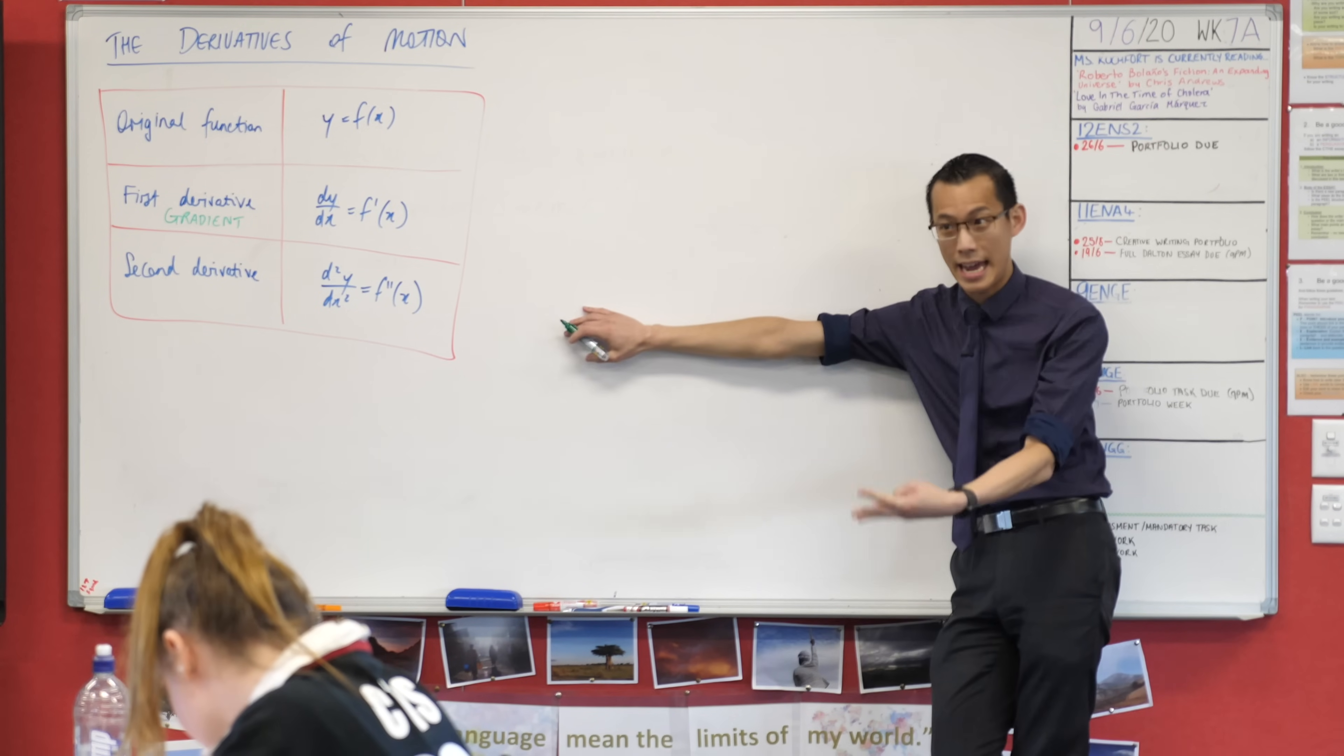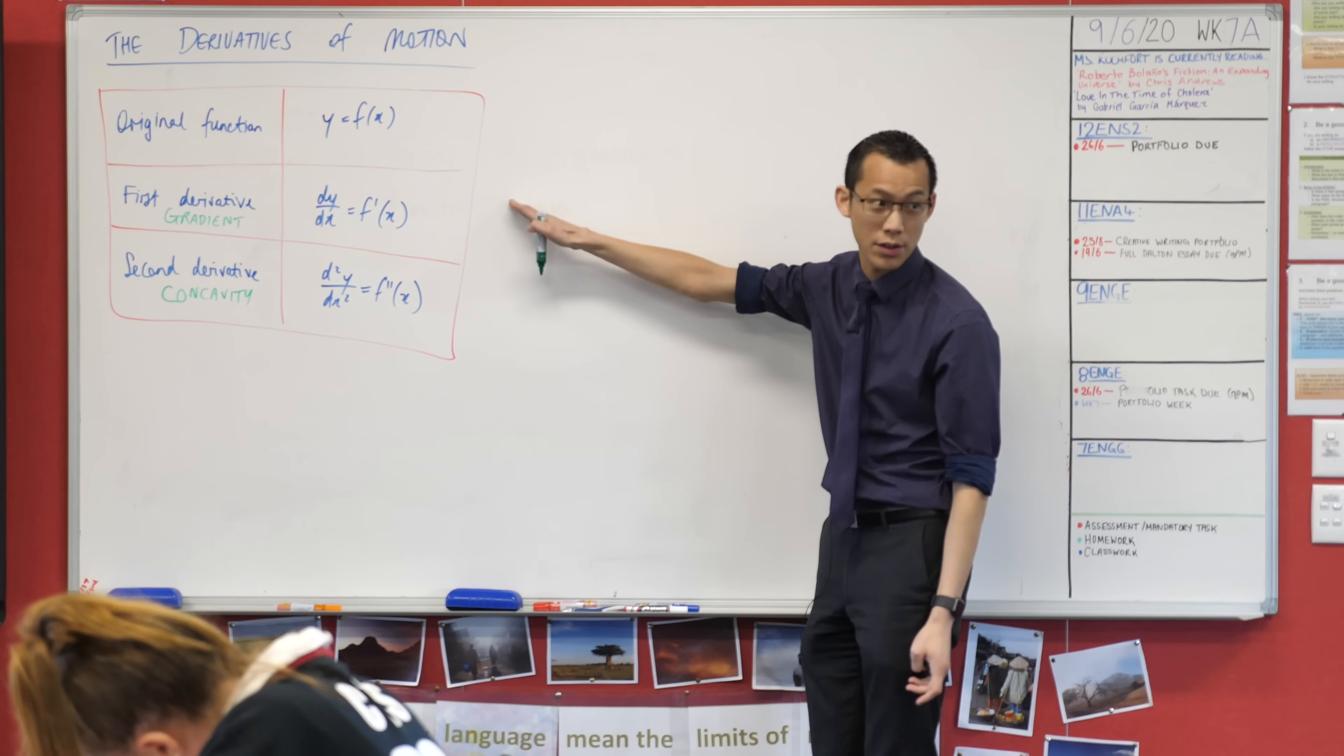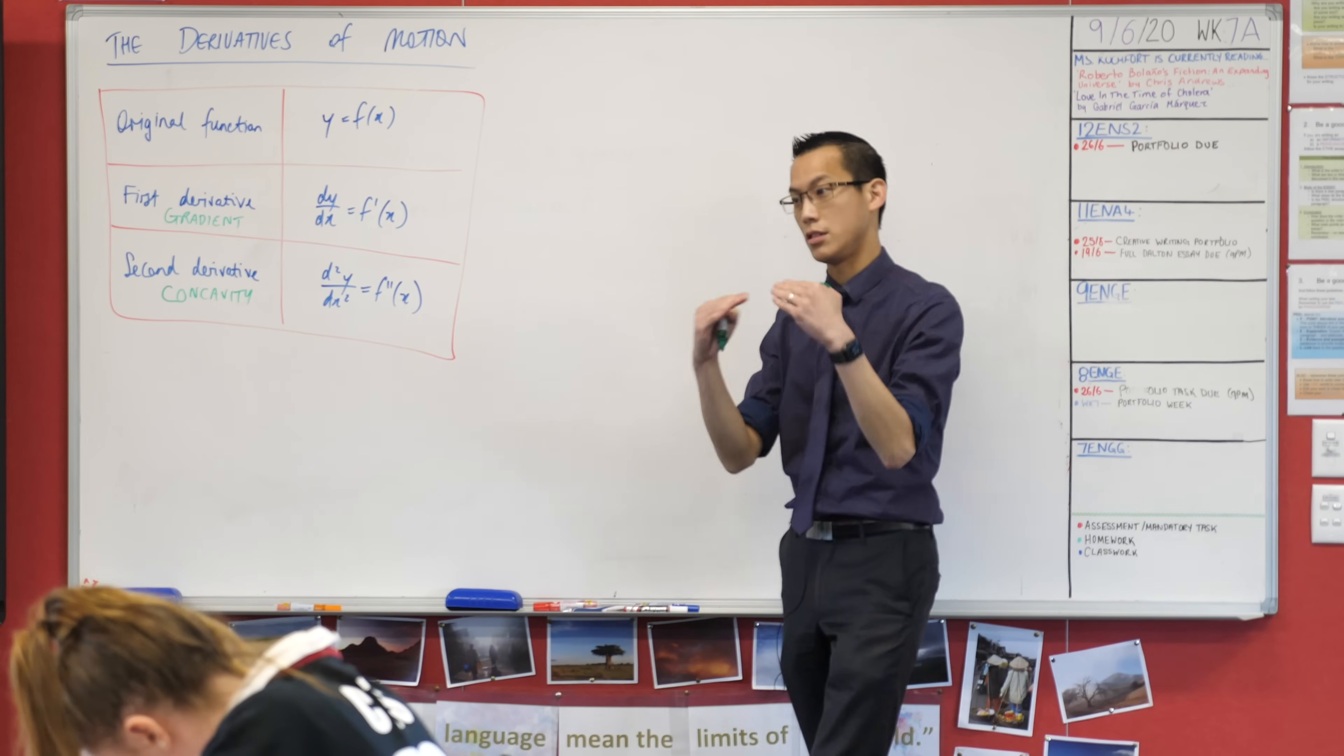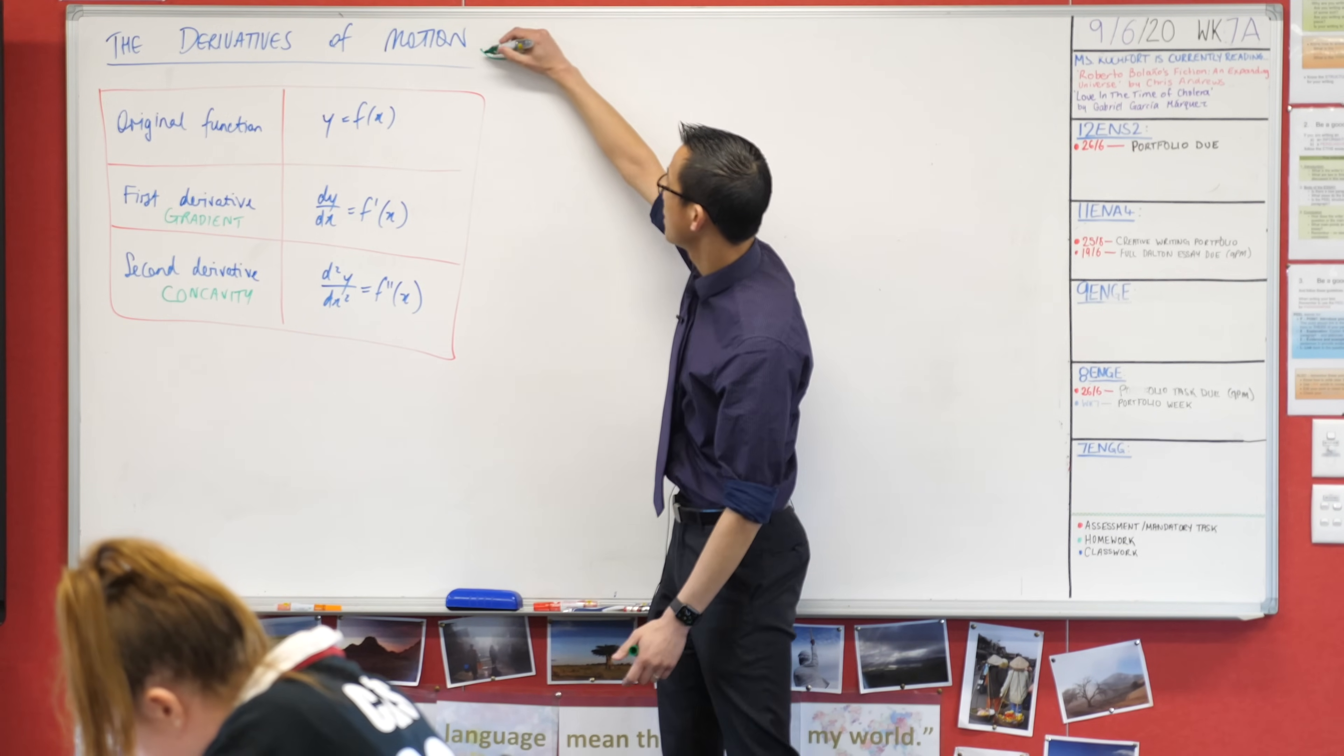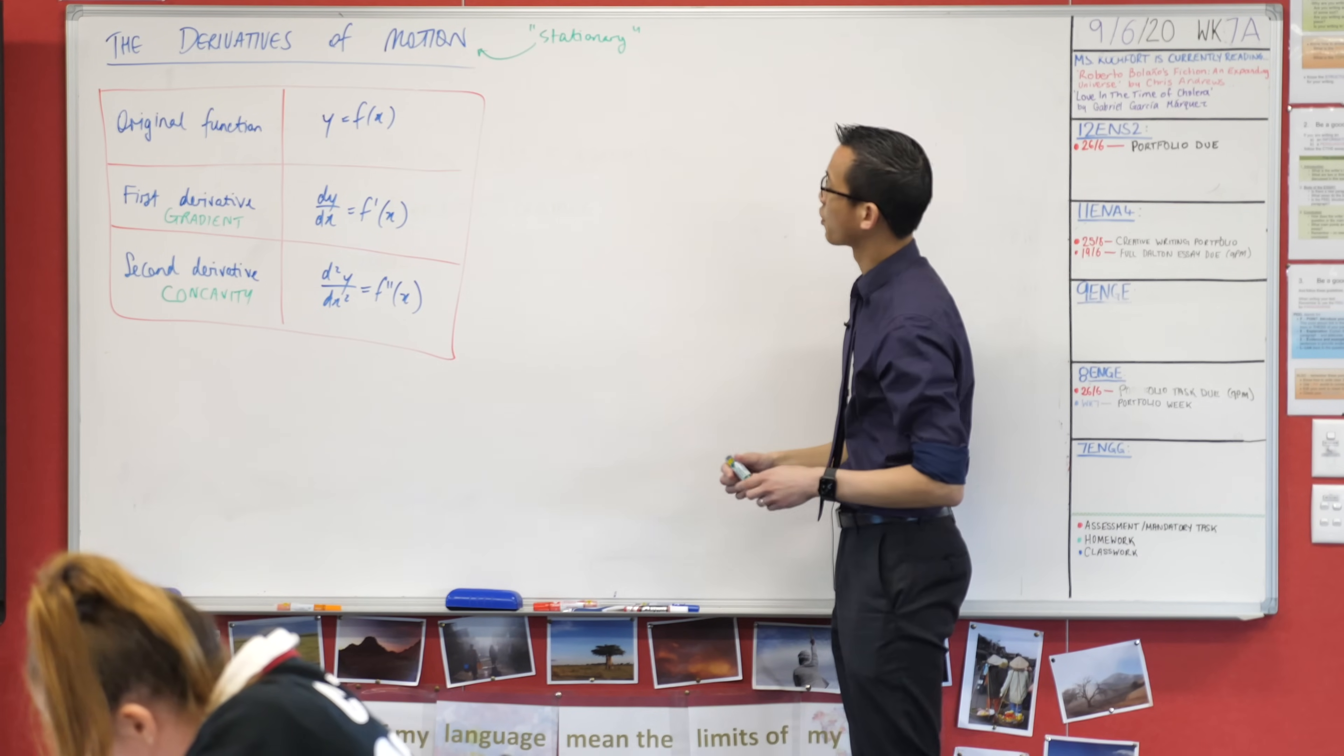Second derivative, if you differentiate again, gives you a different geometric feature, namely concavity. This is not about are you going up or down, but how is your going up or downness changing. It's how much the first derivative is changing, just like the first derivative is how much the original function is changing. When the gradient is zero, we call that a stationary point. This is language that we borrow from motion - stationary means you're not moving anywhere, your gradient is neither up nor down.